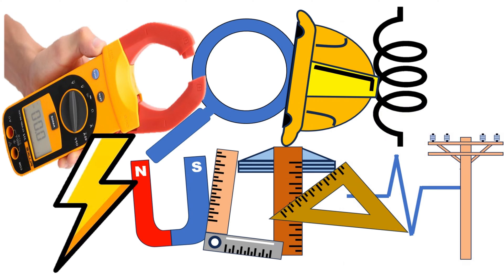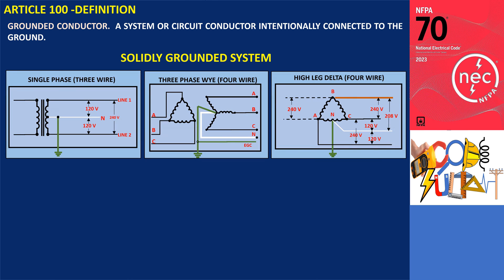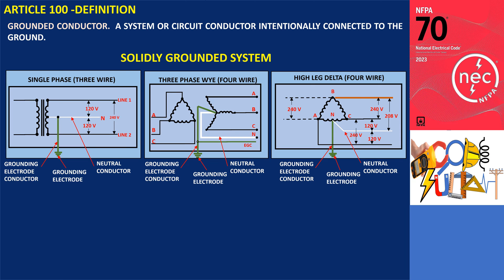Hello everyone, welcome to the Codesultant channel. According to the code, a grounded conductor is defined as a system or circuit conductor intentionally connected to the ground. To illustrate this concept, consider a solidly grounded system where a neutral conductor is intentionally linked to the earth through a grounding electrode conductor and a grounding electrode.